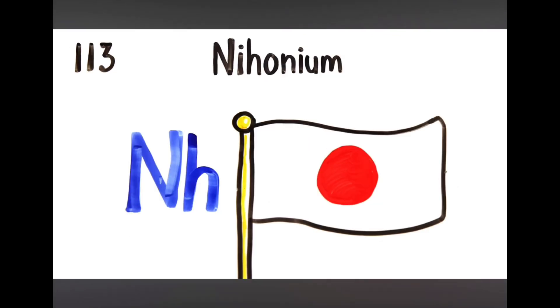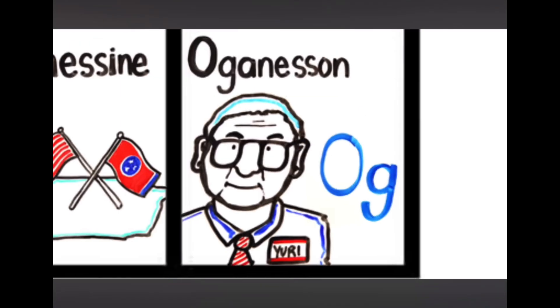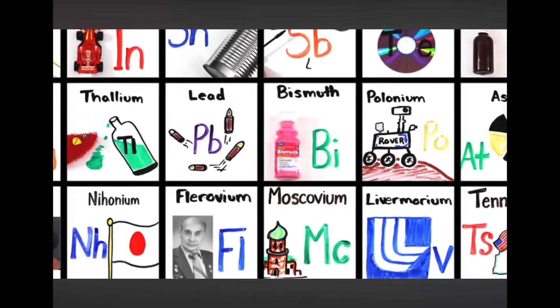Dubnium, seaborgium, bohrium, hassium, meitnerium, darmstadtium, roentgenium, copernicium, nihonium, flerovium, moscovium, livermorium, tennessine and oganesson, and then we're done!